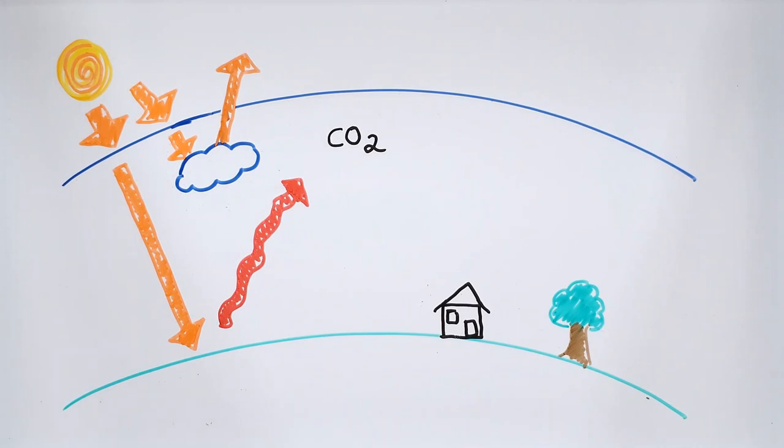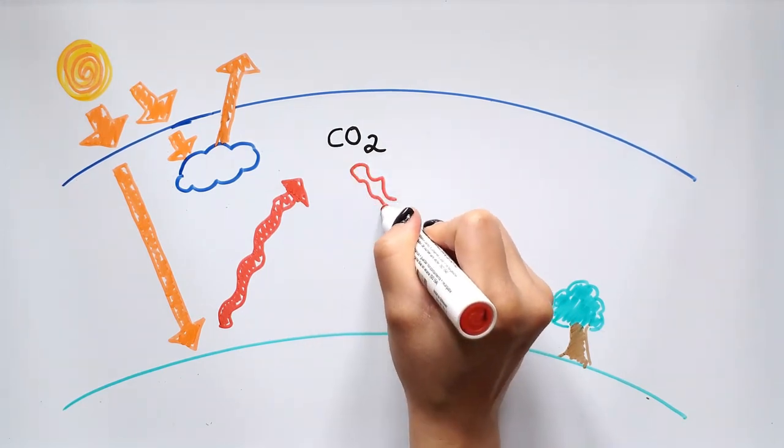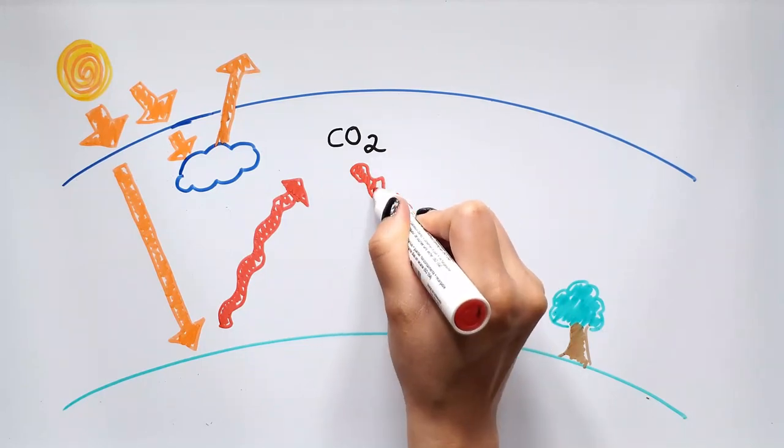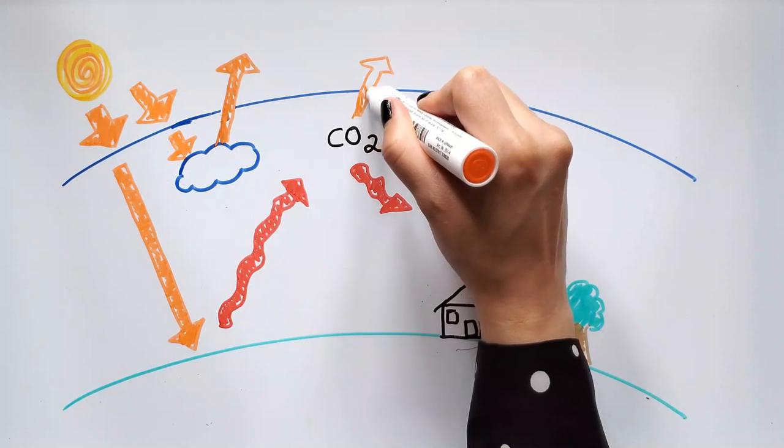Due to burning fossil fuels and other human activities, greenhouse gases are increasing in the atmosphere. These make it harder for infrared light to escape the atmosphere, and so it gets warmer.